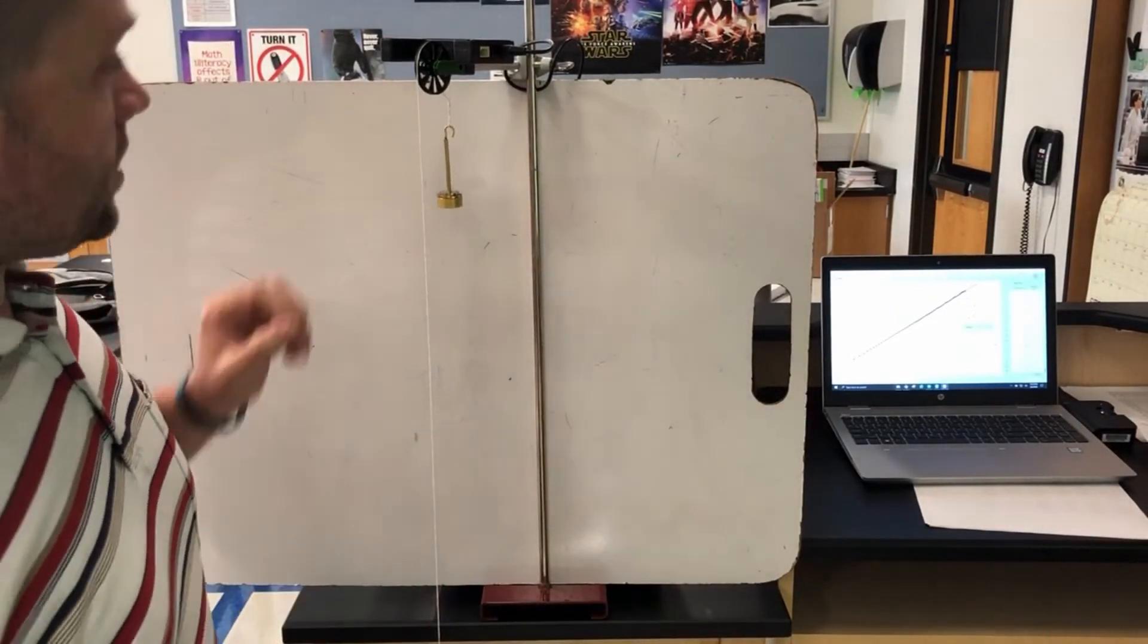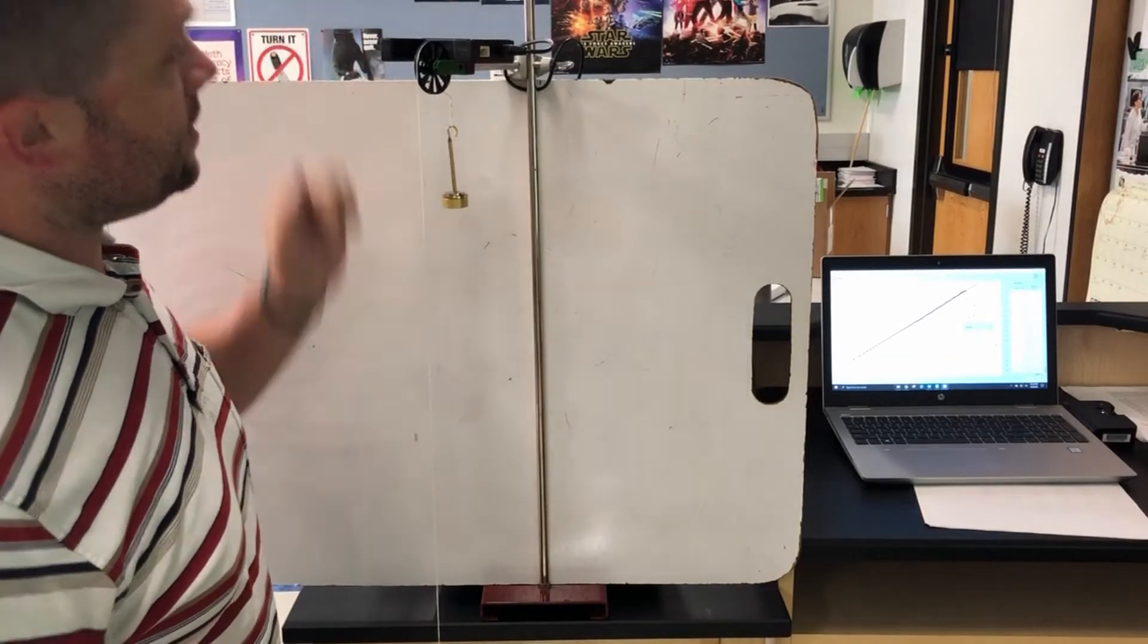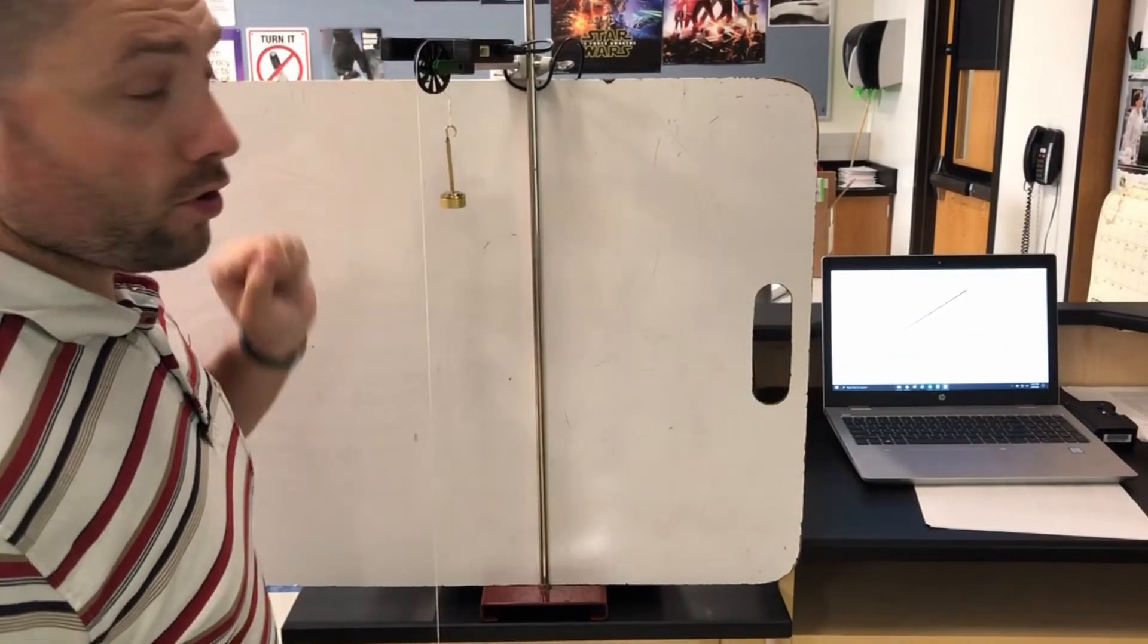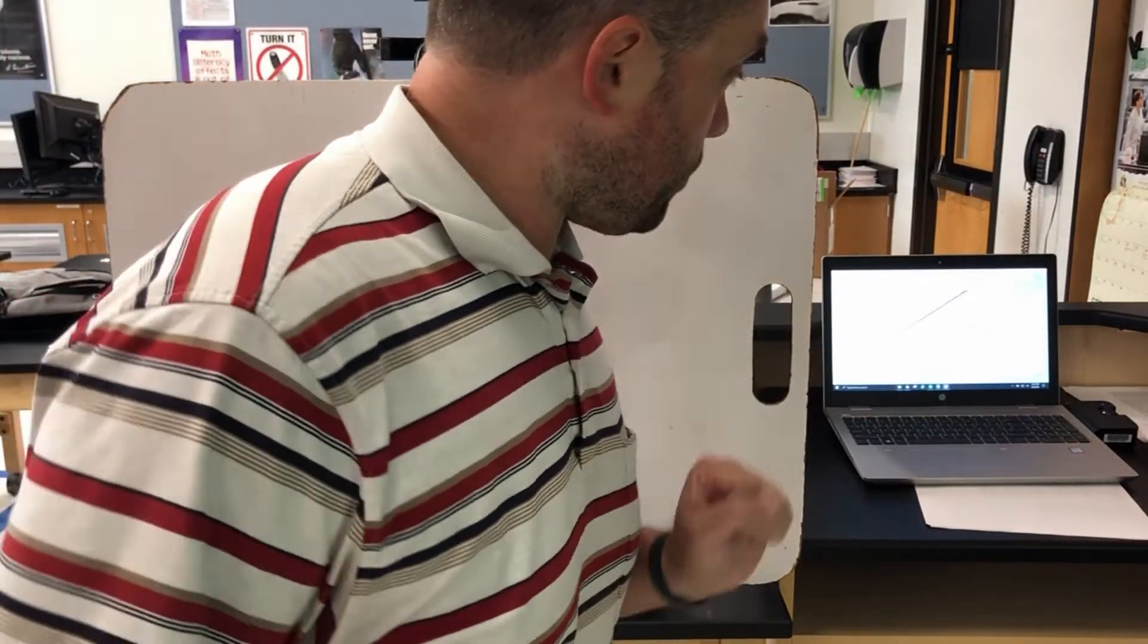The way it works is this pulley spins, and my photo gate captures the motion of that, and then it puts it on the computer, so I get a graph.